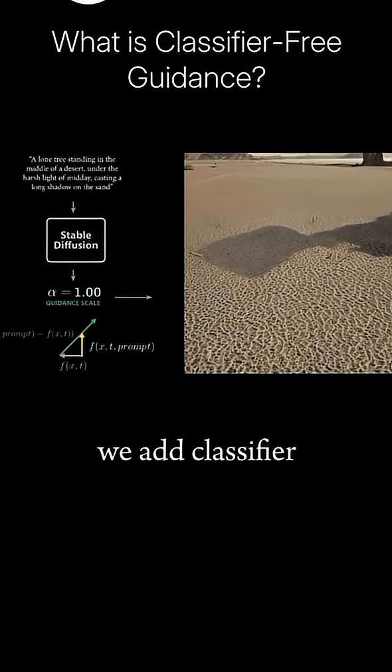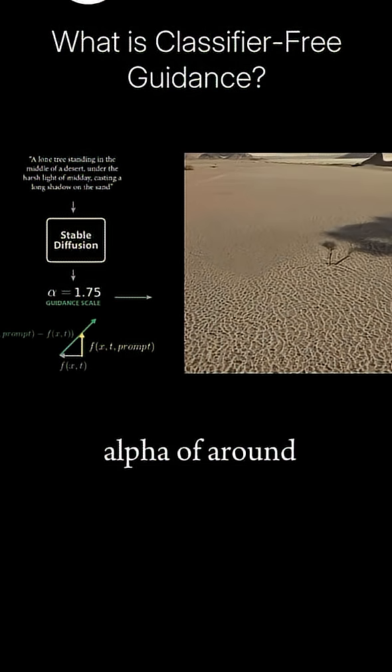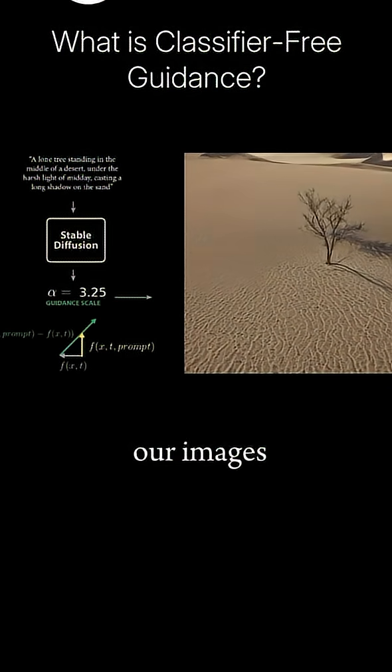If we add classifier-free guidance to this model, once we reach a guidance scale alpha of around 2, we start to actually see a tiny tree in our images.